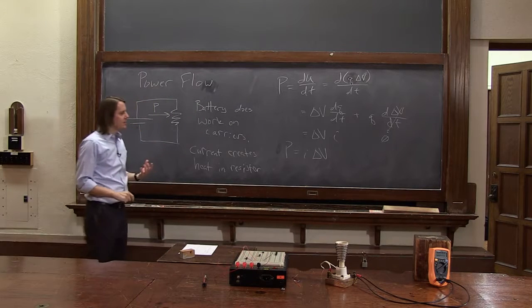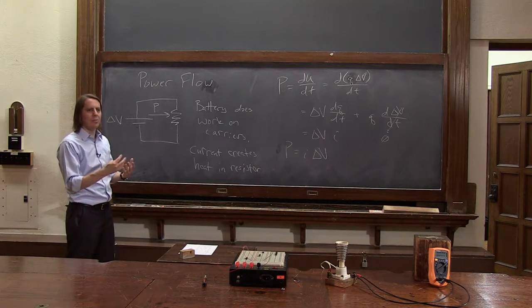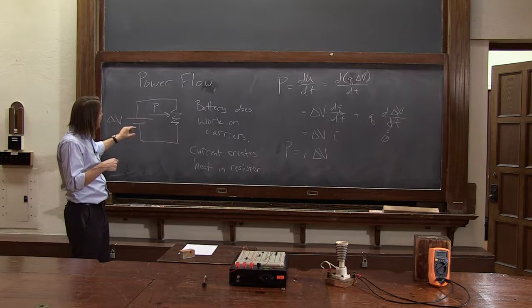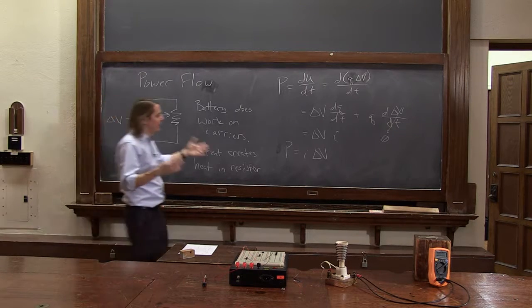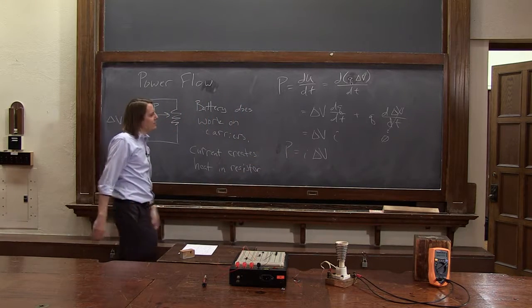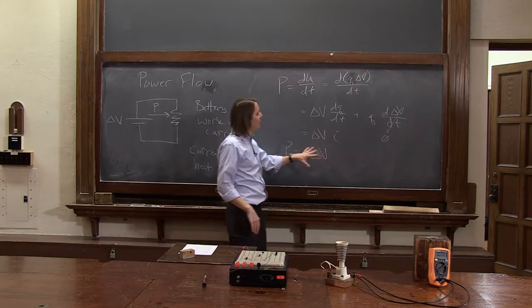It's the current times the amount of work, or the potential difference you carry it through. And it makes sense. If the work it does on a single carrier is its charge times delta v, then the rate of work, this is just the rate of charge, that would make sense.